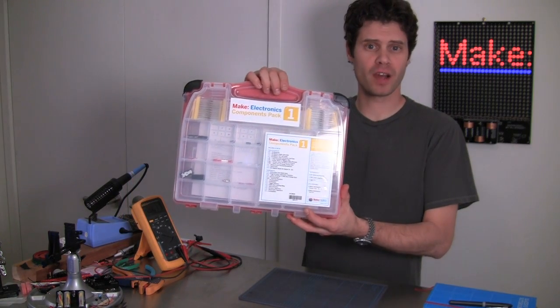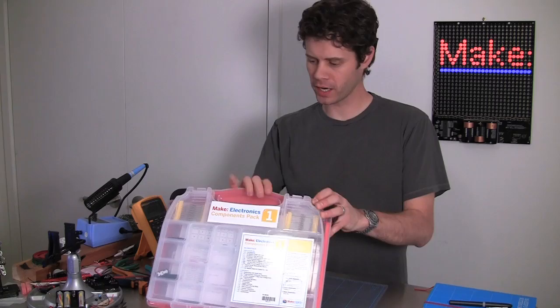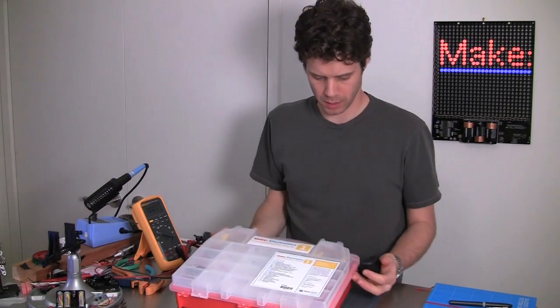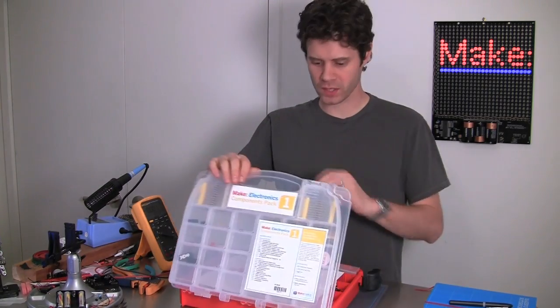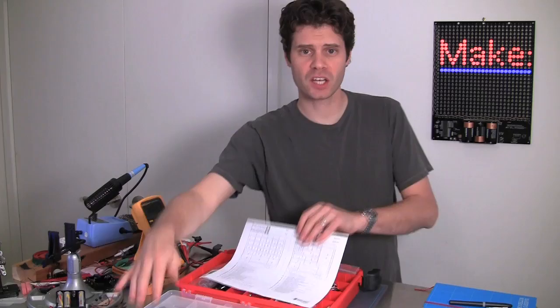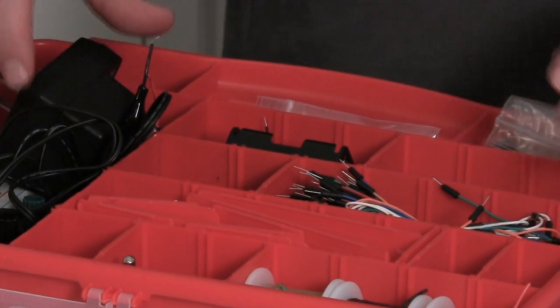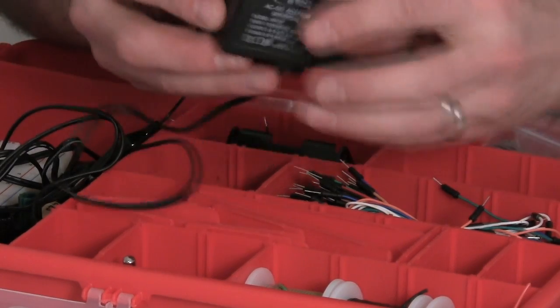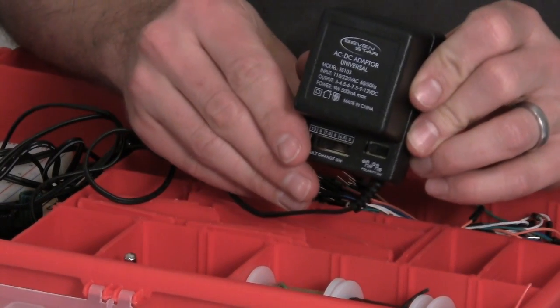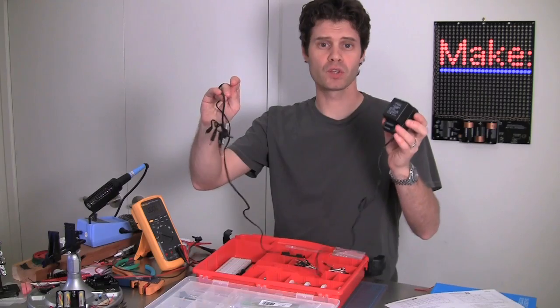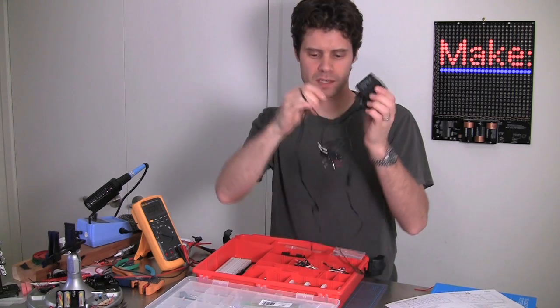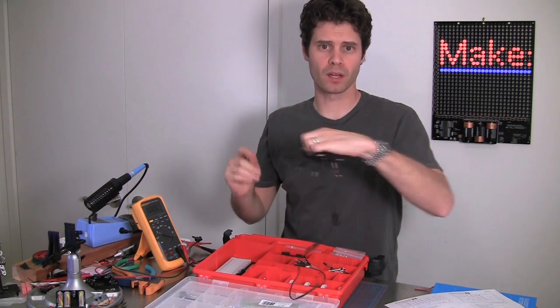First, let's take a look inside the electronics pack. When you open it up using these two larger latches on the side, you can get at the main section of the kit. In here you'll find a couple of things that we're going to need. One is the AC adapter. It's going to go AC to DC and we're going to use a 12-volt setting on this.